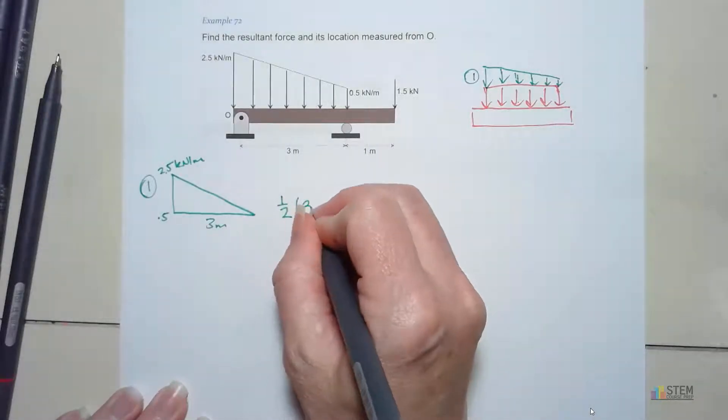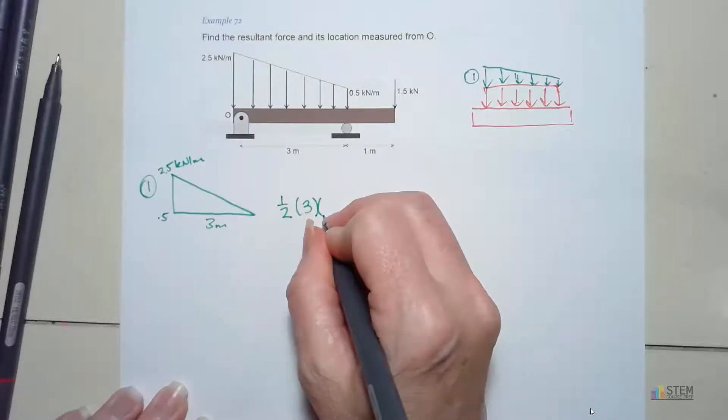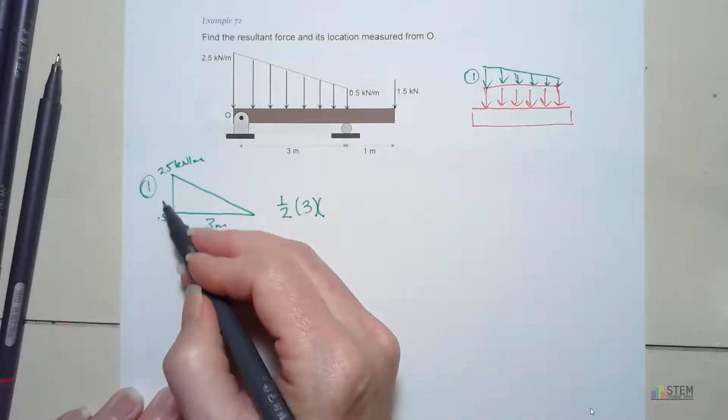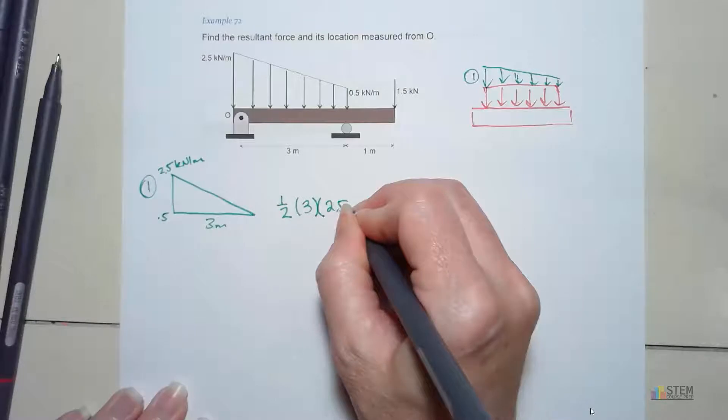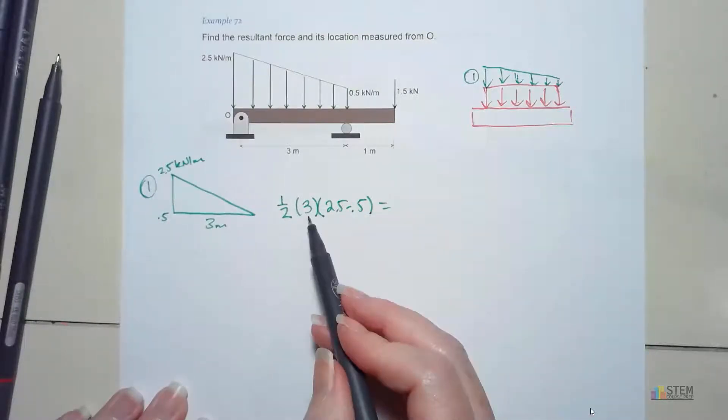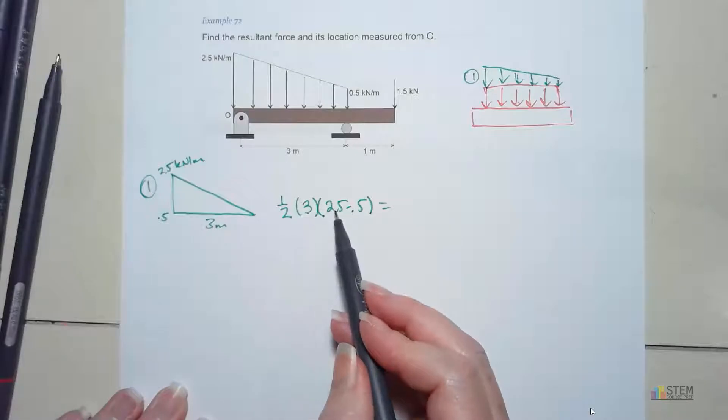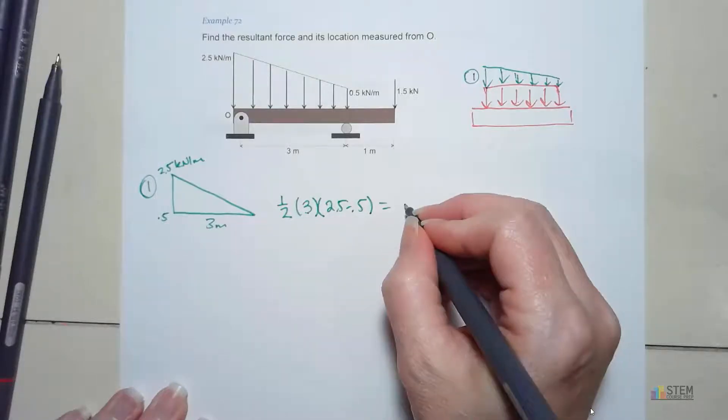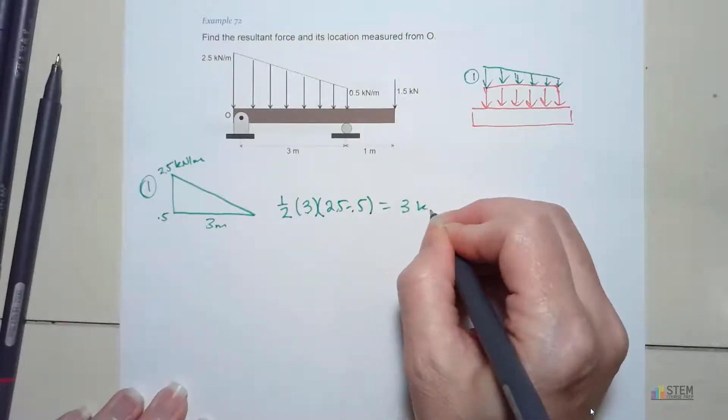So we're going to have 1/2 times the base, which is 3, times the height. The height is going to be 2.5 minus 0.5. Notice your units. We've got meters and then kilonewton per meters, so this is going to end up being 3 kilonewtons.